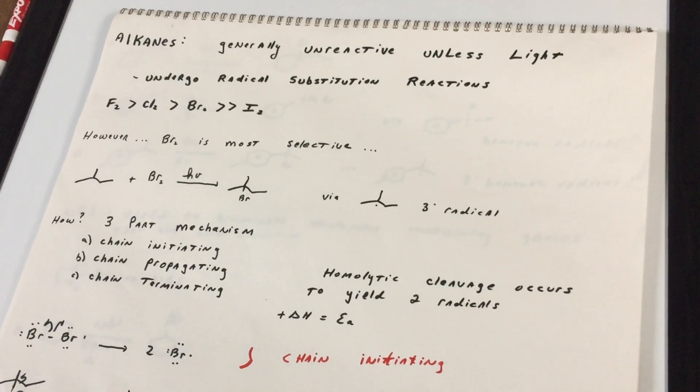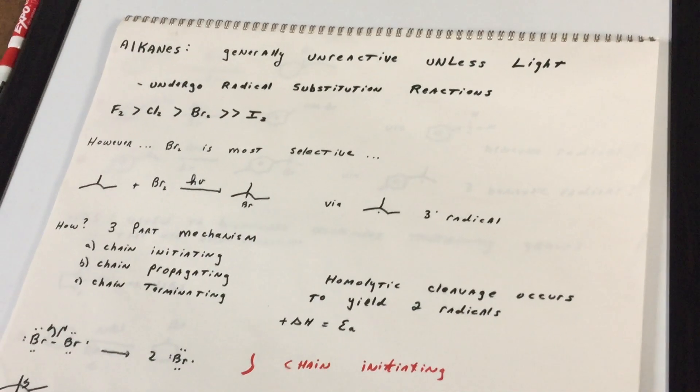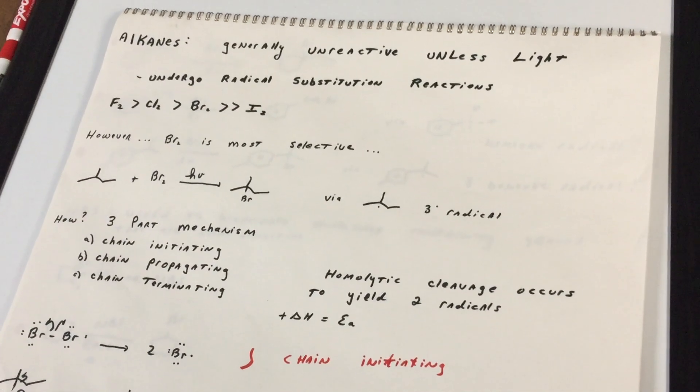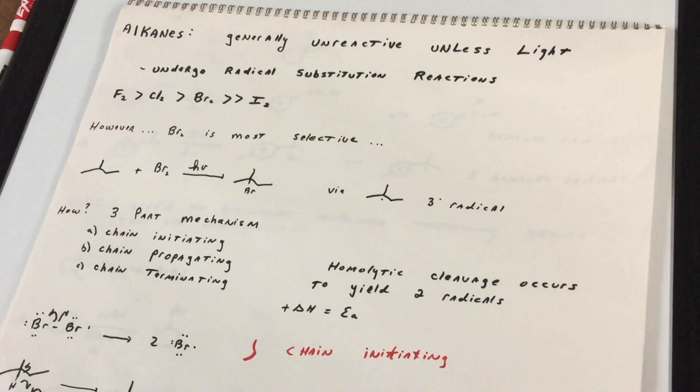Alkanes are generally unreactive unless you have light. And if there's light, we're going to undergo what we call a radical substitution reaction.